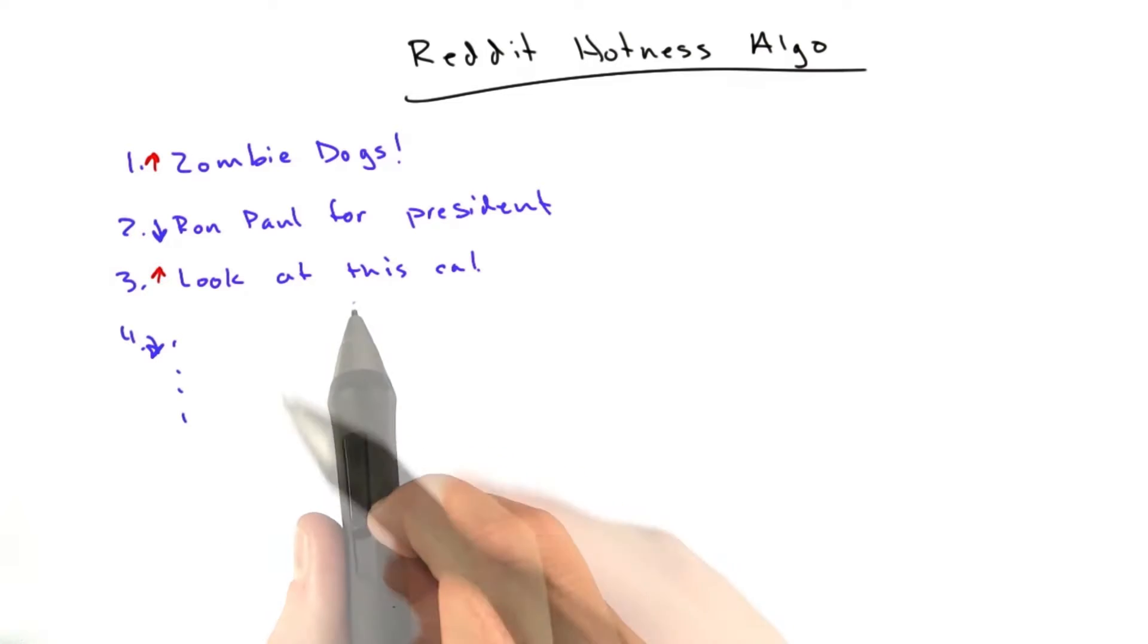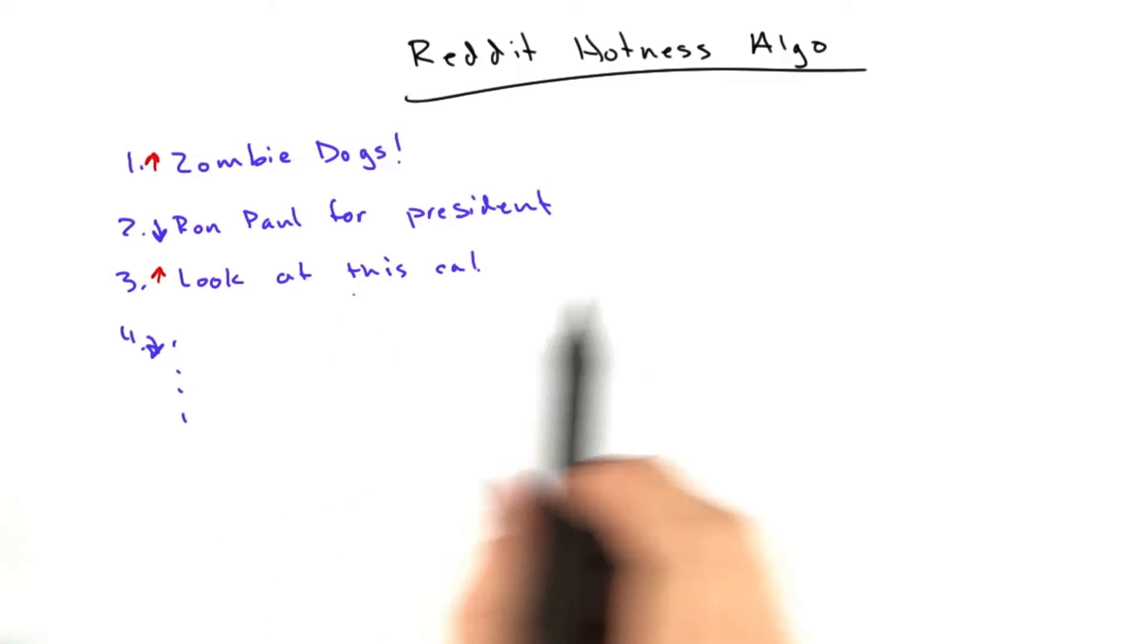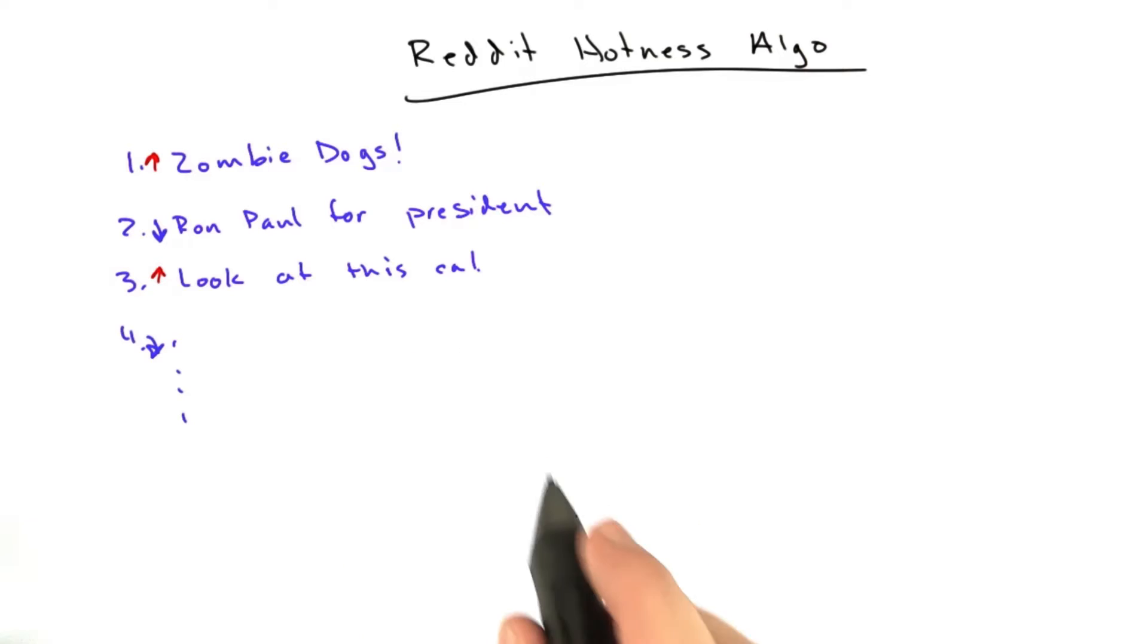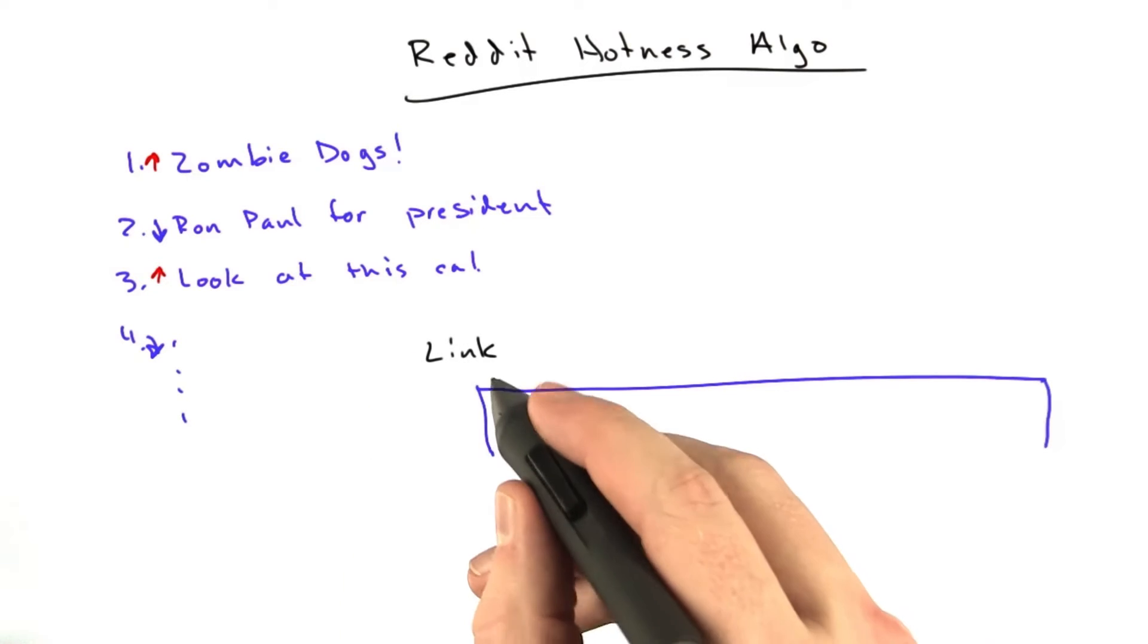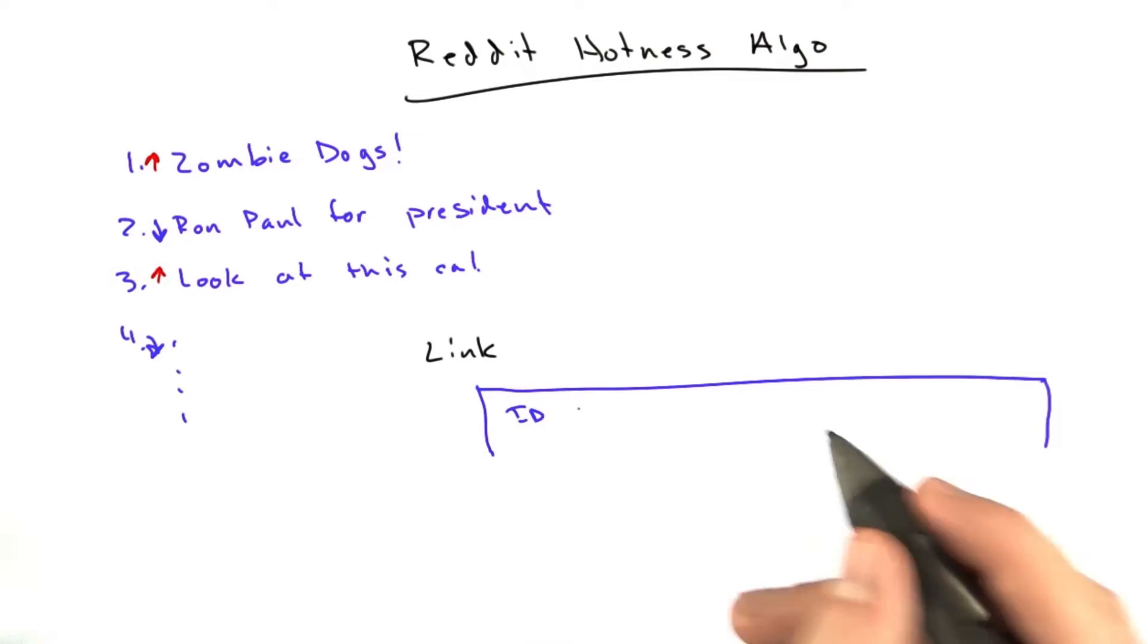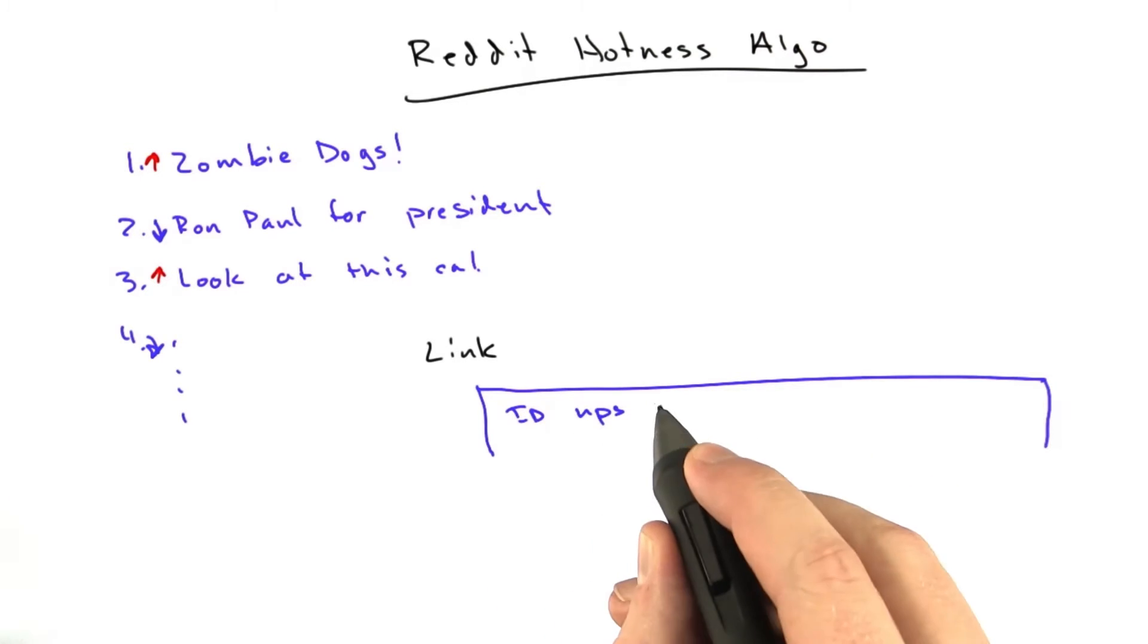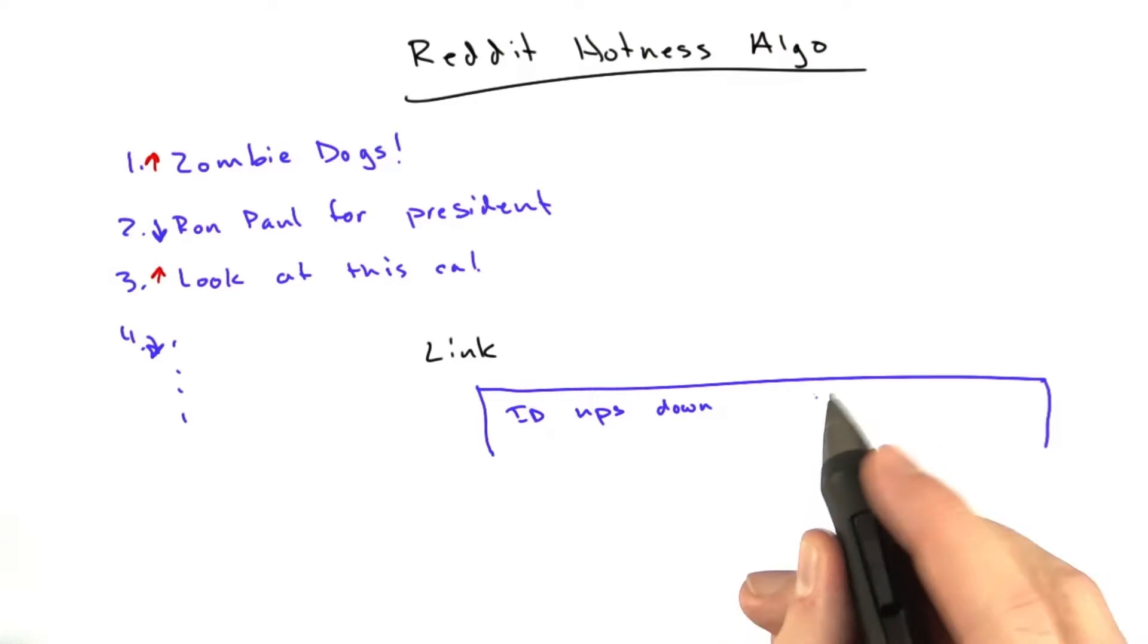So this is a really cool feature of Reddit, and it's actually not that hard to compute because what we do is we use a special index. I'll show you how that works. So we've got a table, a link table, that looks something a lot like what we've been dealing with. It's got an ID, and it's got a number of upvotes, a number of downvotes, and a date.